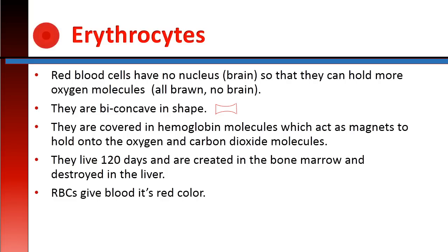Erythrocytes. Red blood cells have no nucleus so that they can hold more oxygen molecules. They are biconcave in shape, meaning they are concave on the top and the bottom. They are covered in hemoglobin molecules, which act as magnets to hold on to oxygen and carbon dioxide molecules. They live 120 days, and are created in the bone marrow and destroyed in the liver. Red blood cells give blood its red color.